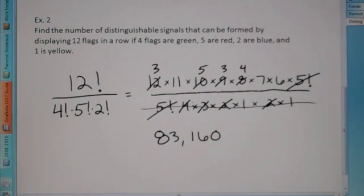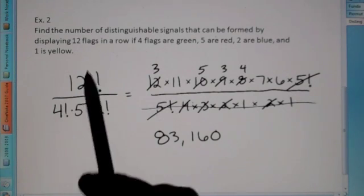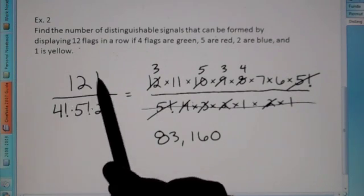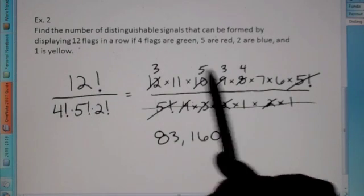So there's eighty-three thousand one hundred and sixty distinguishable signals that can be formed. Okay? Again, total flags, twelve factorial. Twelve different ways to set them up.